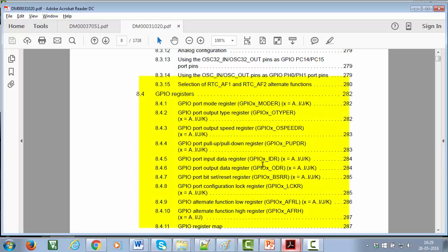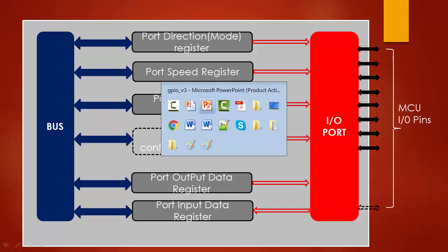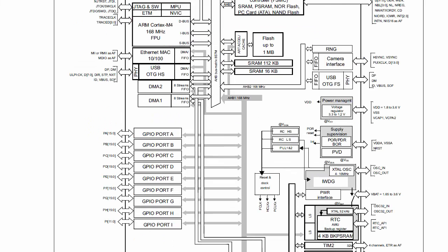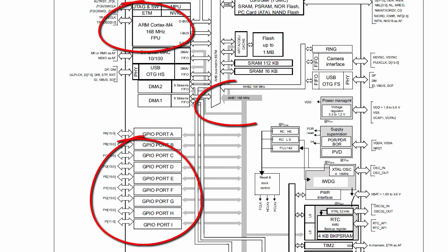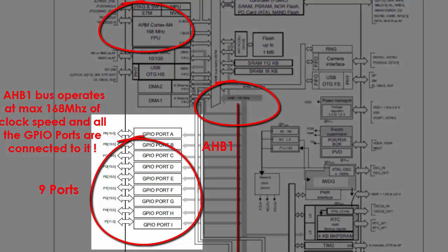Don't worry about all these registers for the time being. In the coming videos I will walk you through them one by one. Also note that all these GPIO registers are connected over a system bus to the processor. If I open the datasheet of the STM32F4XX microcontroller, you can see that all these GPIO ports are connected to the processor over the AHB1 bus. AHB1 is a main system bus which can operate at a maximum of 168 MHz clock speed. Each of these GPIO ports has all those configuration registers which I have just shown to you.